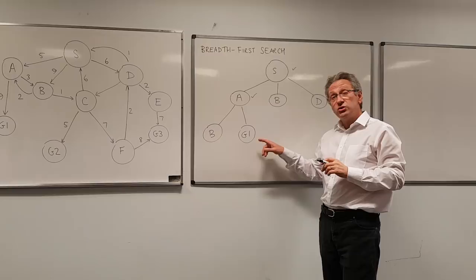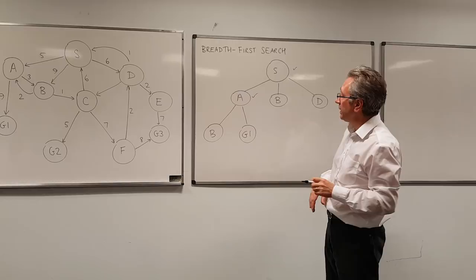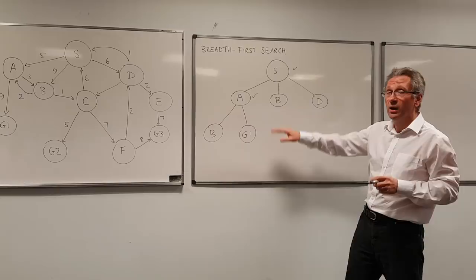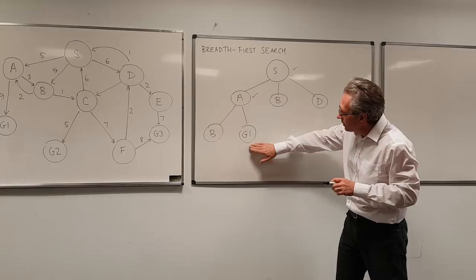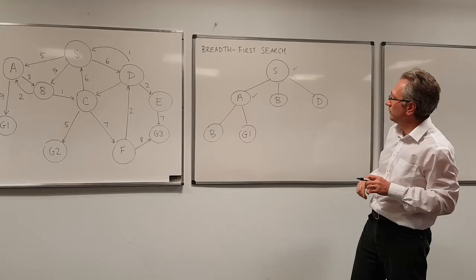Now you'll notice that G1 is a goal node. But I don't accept it at this point as being the shortest path. And the reason for that is that I haven't looked at these yet. Either of those might be the goal state. It's just that I haven't looked at them yet. So therefore, I'm not going to accept that as the shortest path. Not yet, anyway. I need to look at these first.